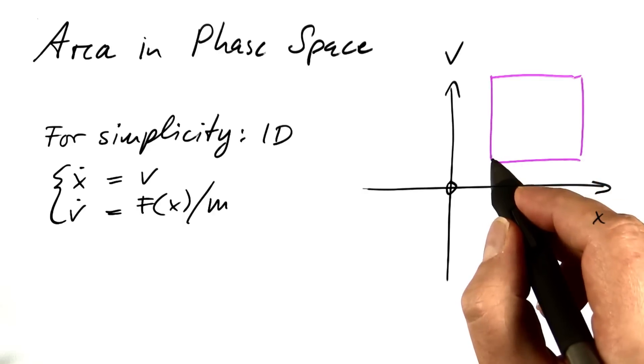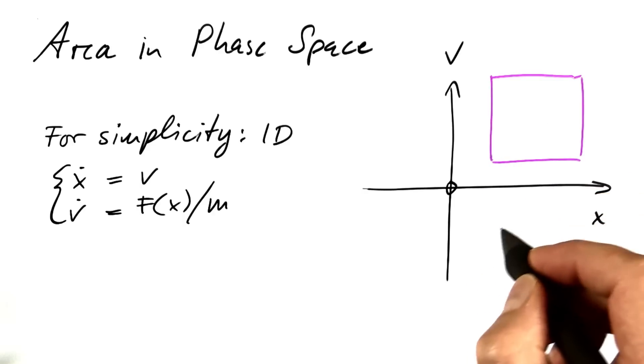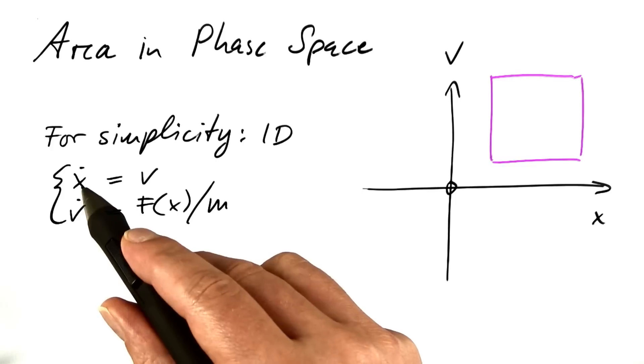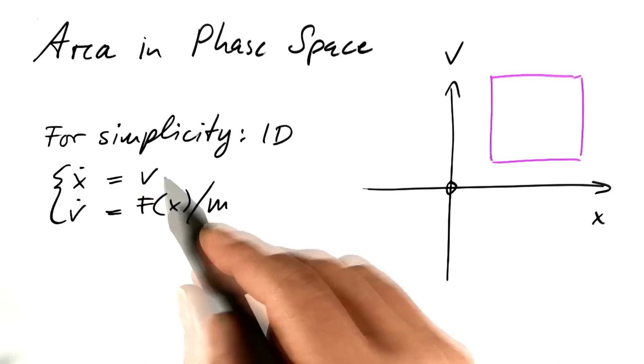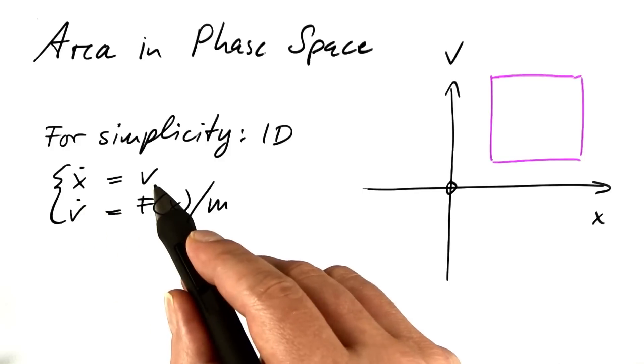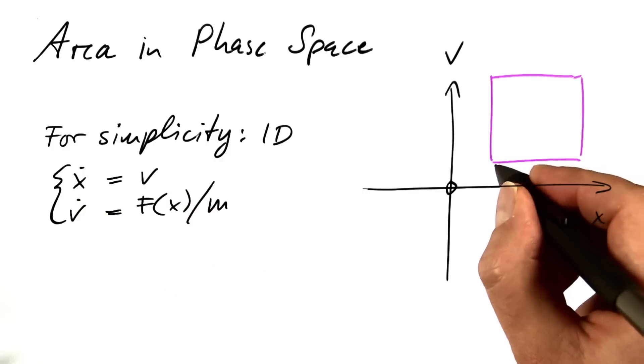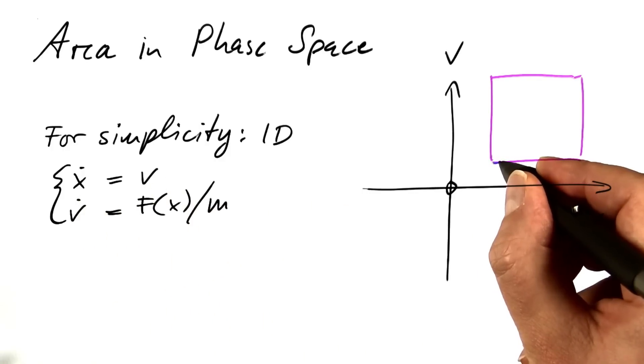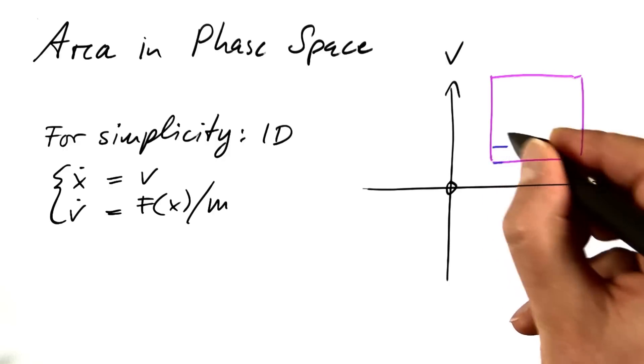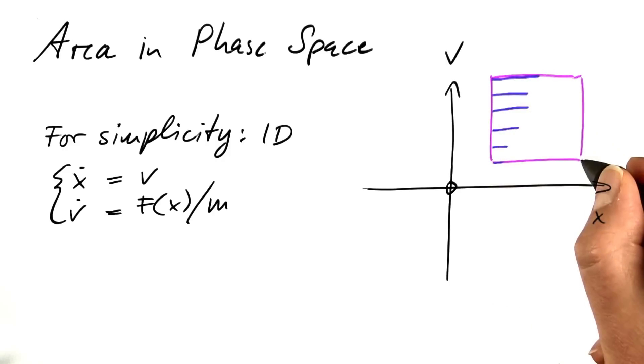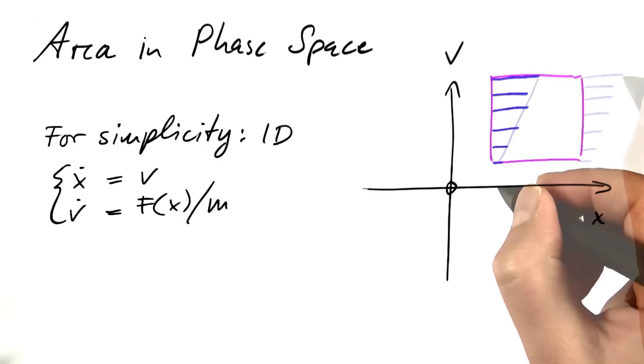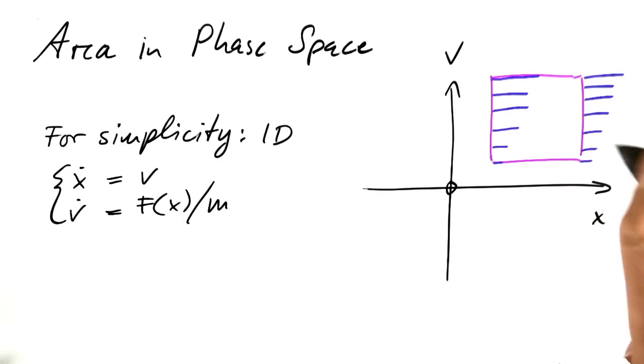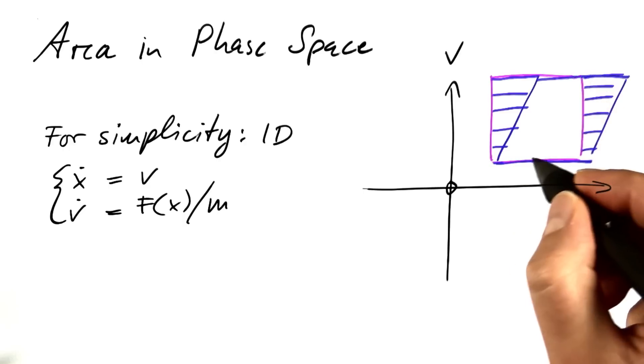Why does the area in phase space stay constant as it evolves? Let's look at the first equation. The position changes with a rate of the velocity. So, if we wait for a small time and look at where we're ending, x will increase a little here, increase more here, more here, and so on, depending on v. And this motion does not depend on x. It just depends on v. So, our initial area will be deformed into this, which is the same area.